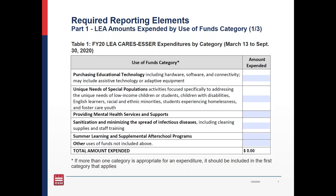The next categories are: unique needs of special populations — activities focused specifically on addressing the unique needs of low-income children or students, children with disabilities, English learners, racial and ethnic minorities, students experiencing homelessness, and foster care youth. Then providing mental health services and supports; sanitation and minimizing the spread of infectious diseases, including cleaning supplies and staff training; summer learning and supplemental after-school programs; and other uses of funds not included in the above.